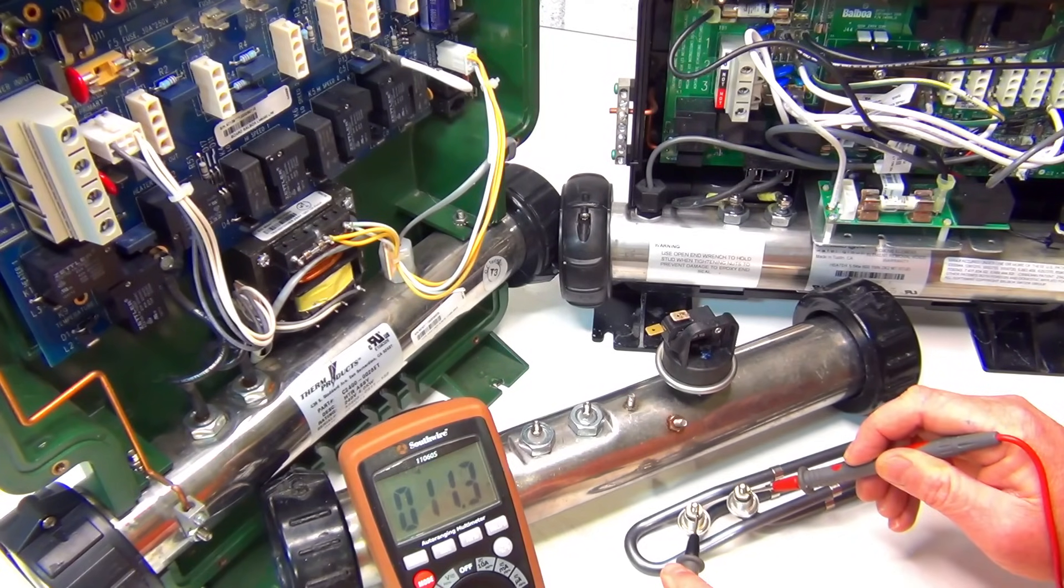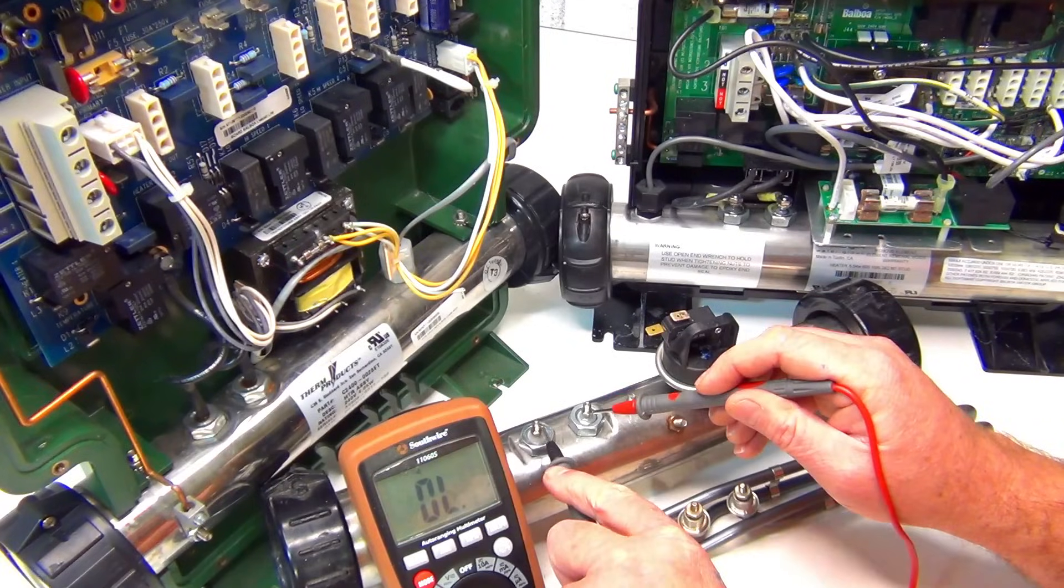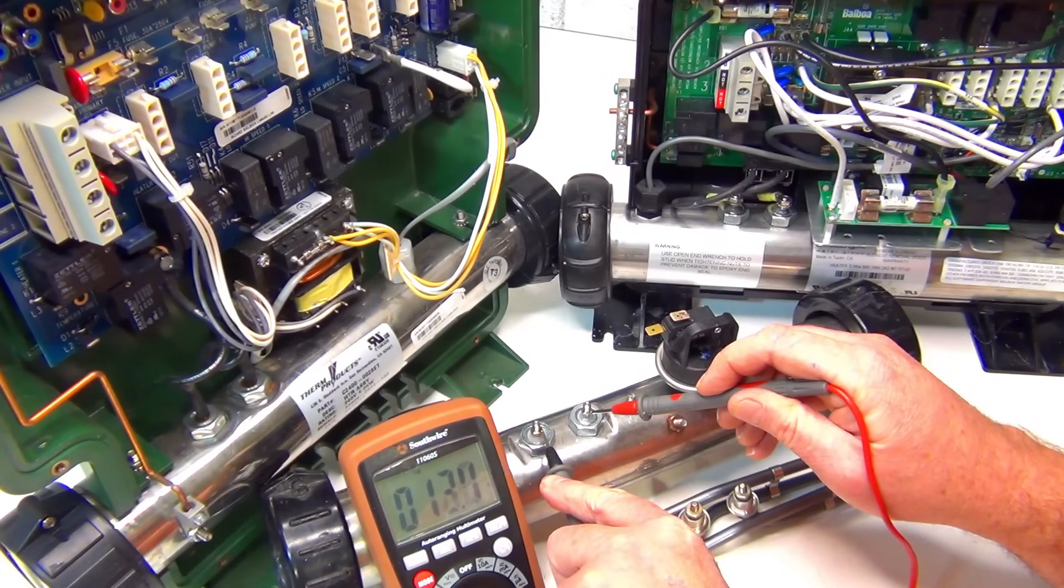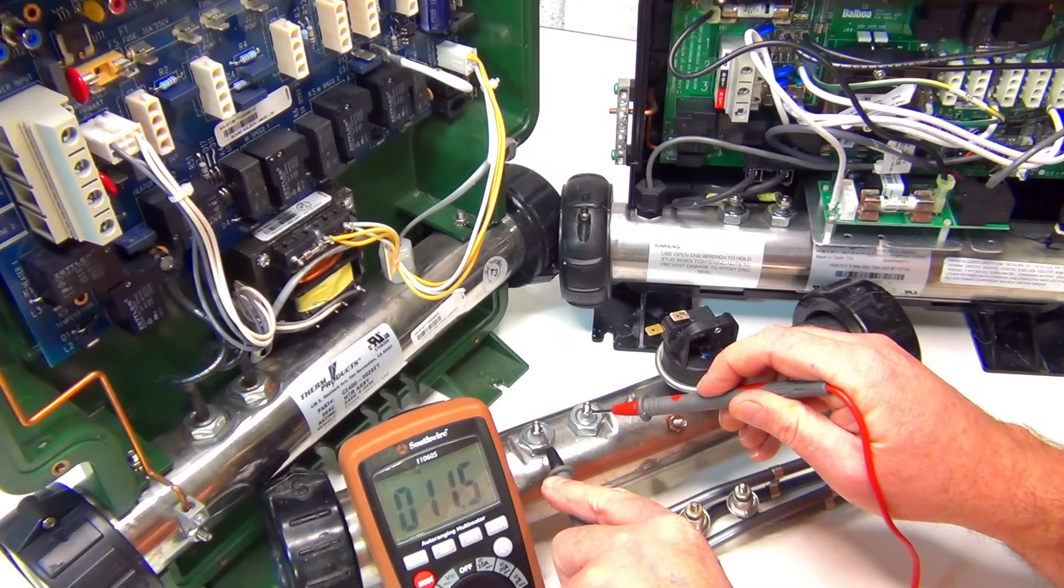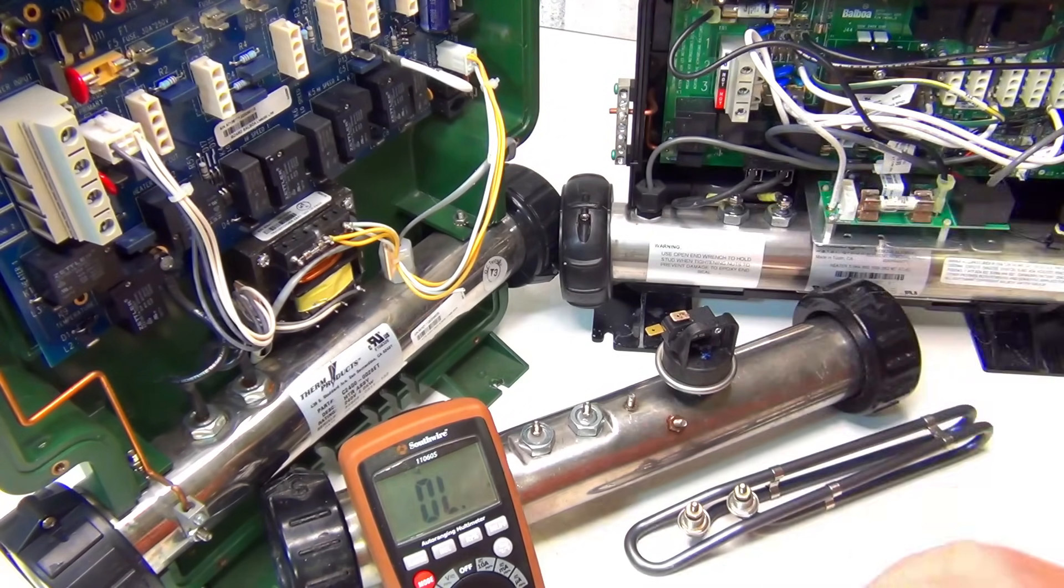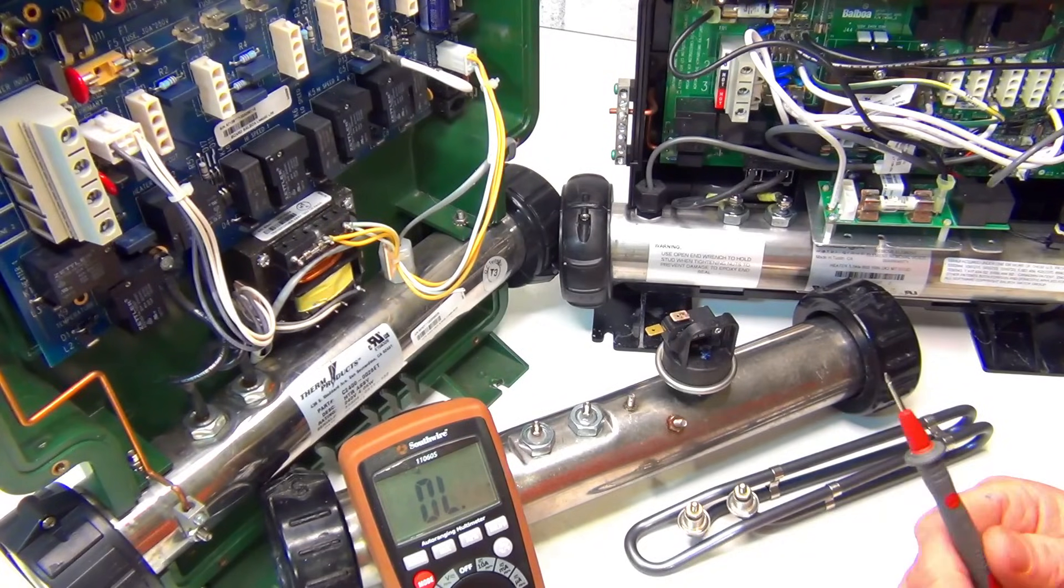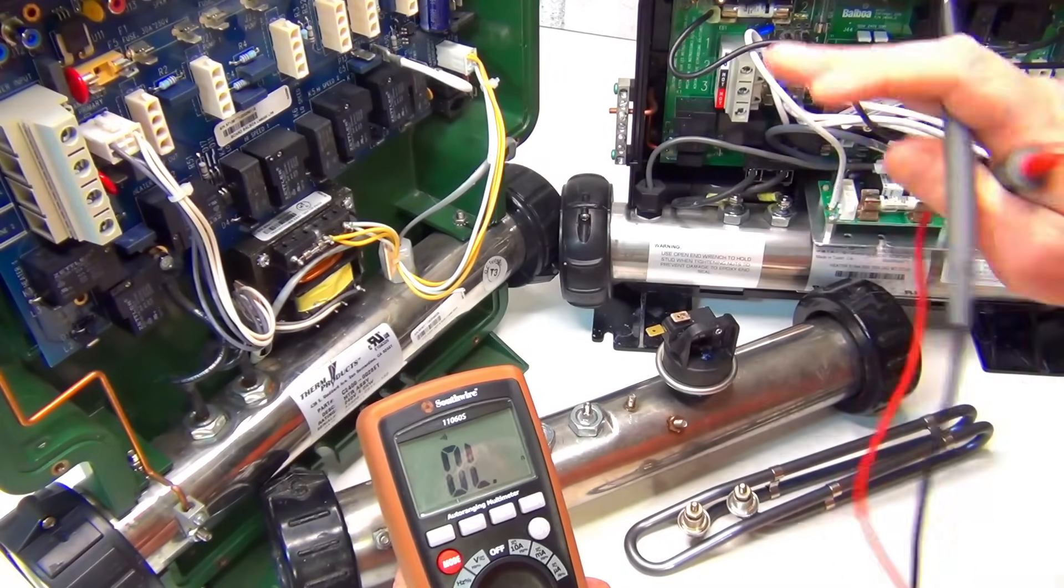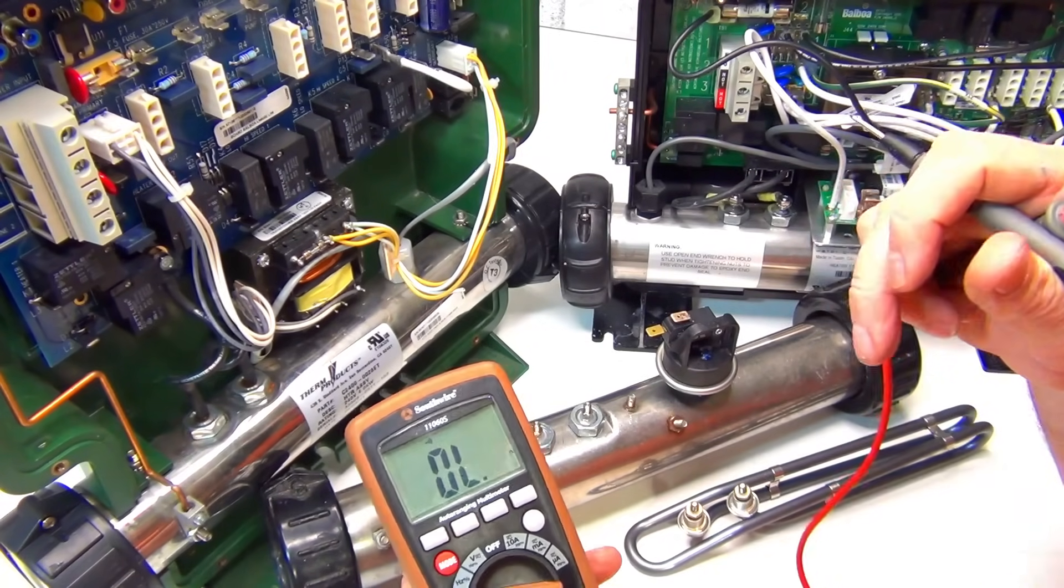Because we tested ohms before and it was about the same, it was 11.7. So I'm just showing you the difference here. So we get the beep, it goes down. Same thing. I'm not even going to do the fourth one, you get the idea. The beeping is kind of annoying me.